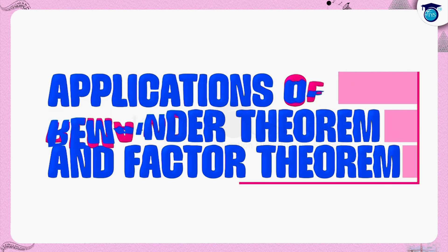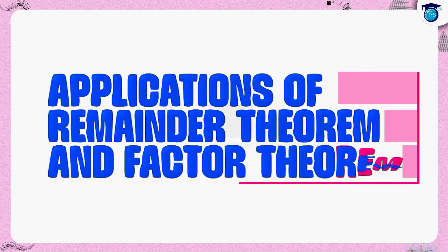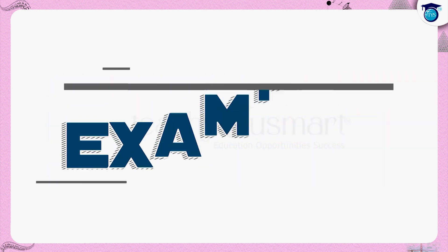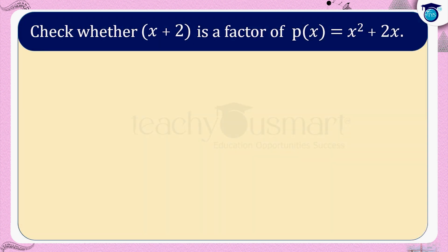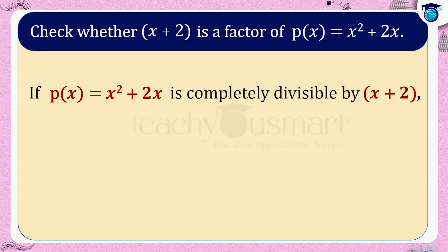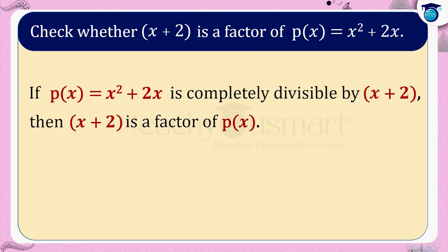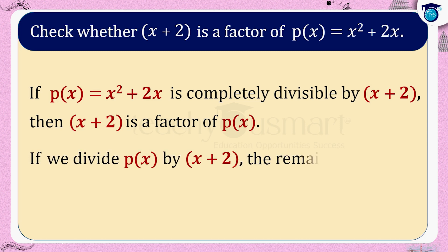Today let us see some application problems using the remainder theorem and factor theorem. Let us do one example: check whether x plus 2 is a factor of p of x equals x squared plus 2x. We know that if p of x is completely divisible by x plus 2, then x plus 2 is a factor of p of x. That is, if we divide p of x by x plus 2, the remainder should be zero.